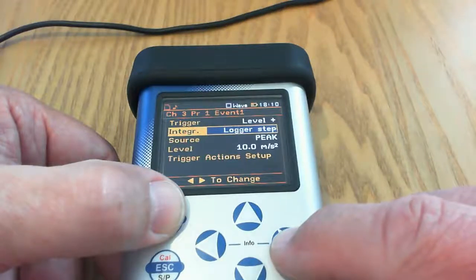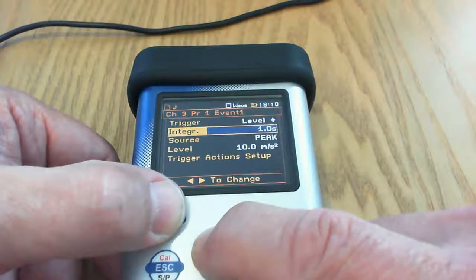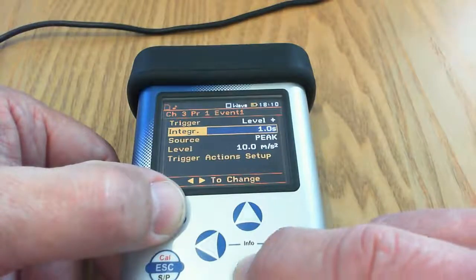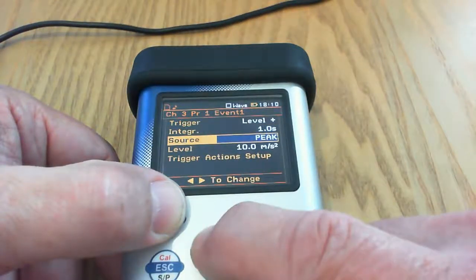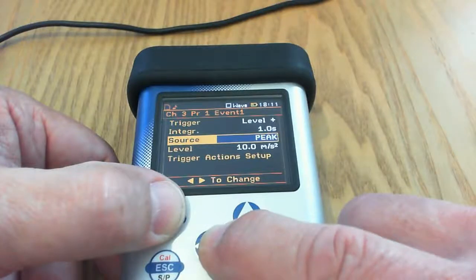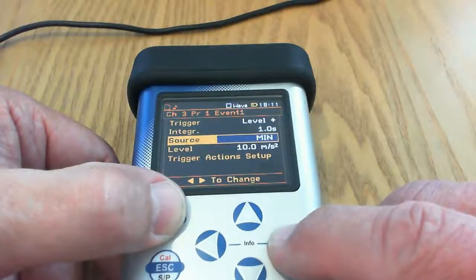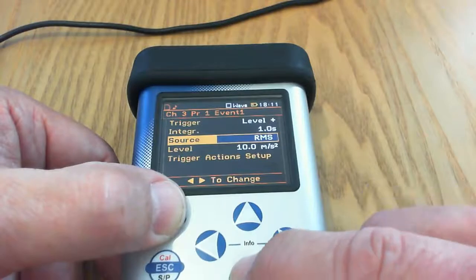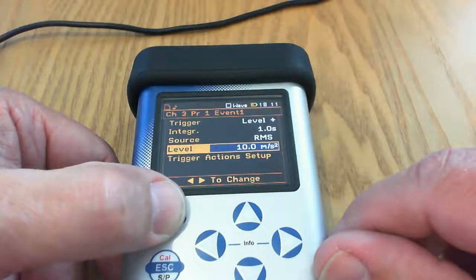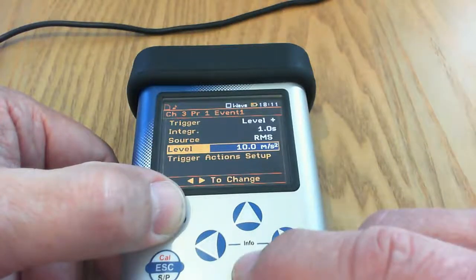You can also choose the integration time for the trigger. For example, if I want to look at if the level goes above a certain threshold with an integration time of one second that will work fine. You can also choose the parameter that you want to trigger off. At the moment it's set to peak. If you're doing peak particle velocity that's fine. If you want to do acceleration for example you might just want to take the simple RMS value. Here you can put in the level that you want to trigger off. In this case if the RMS level with a one second integration time goes above 10 meters per second squared that will give you a positive trigger action.